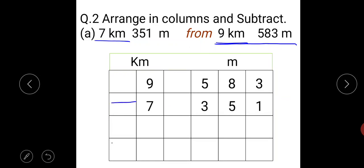Now subtract the numbers, start with metre. 3 minus 1 is 2. 8 minus 5, 3, 5 minus 3, 2. 9 minus 7 is 2. So our answer is 2 kilometre, 232 metre.